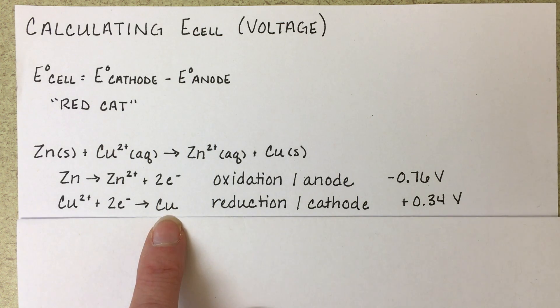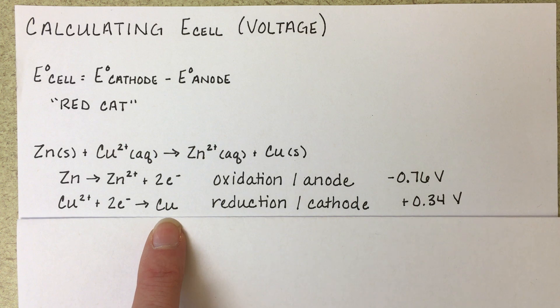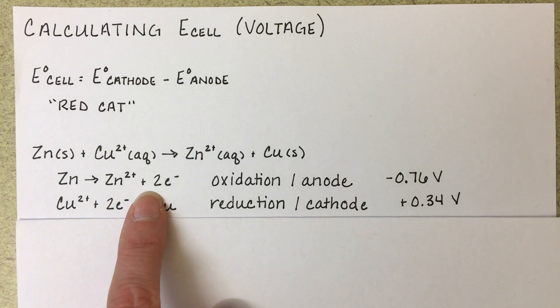Be careful when you're looking this reaction up in your table because there are a couple reactions that copper-2 will actually do. You're looking for the reaction where copper-2 goes to copper-0, not copper-plus-1. So make sure you're picking out the correct half reaction.